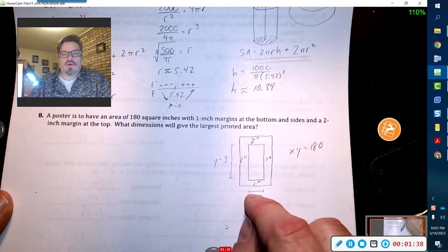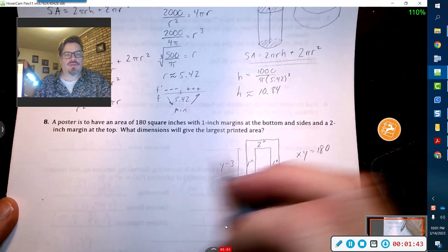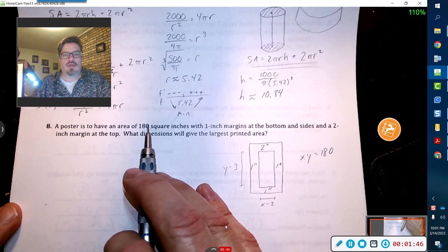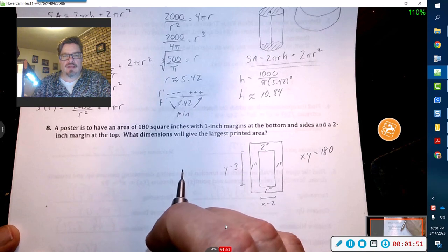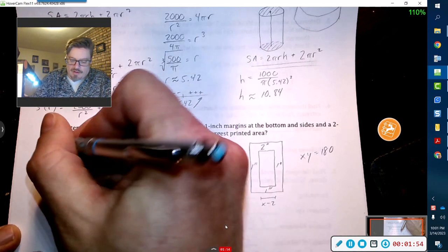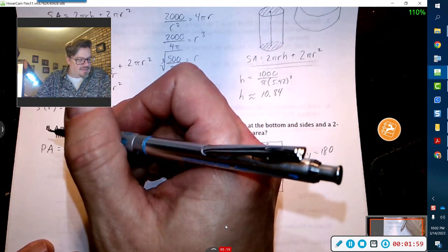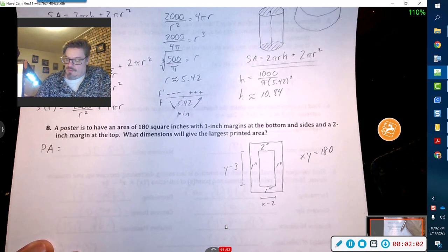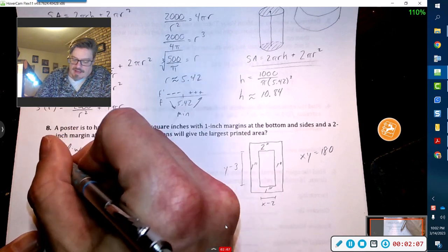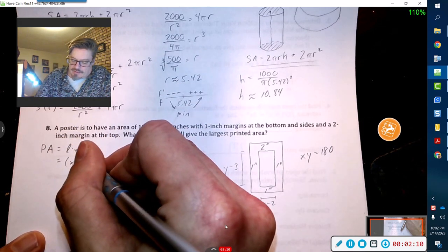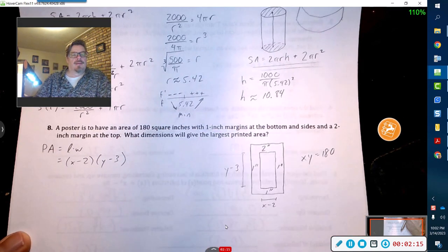Alright, so we know that the posters have an area of 180. The printed area is what we're trying to maximize, so the printed area is length times width: x minus 2 times y minus 3. That's what we're trying to maximize.